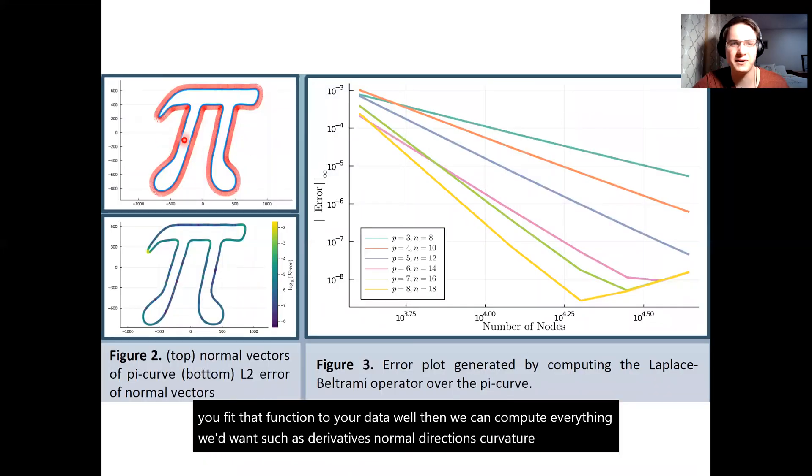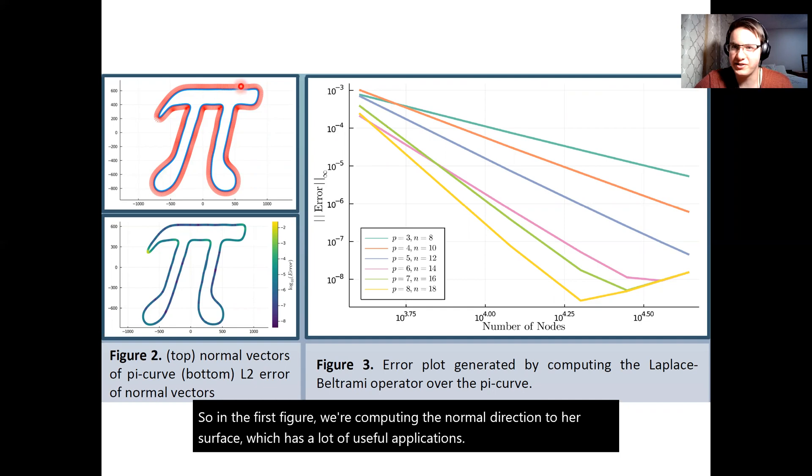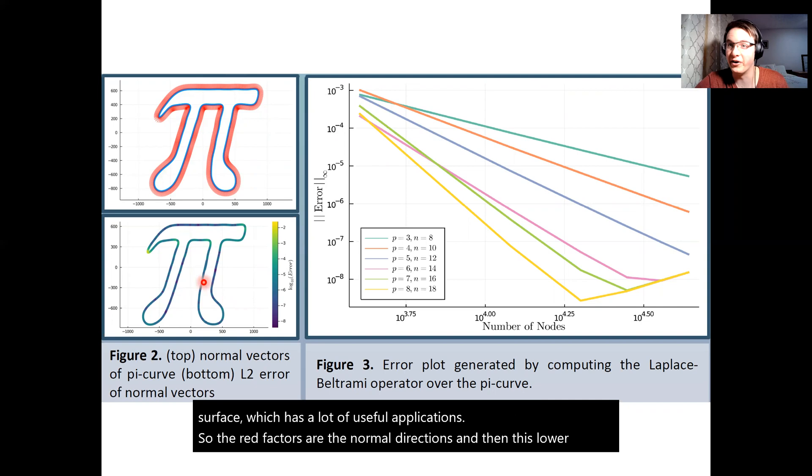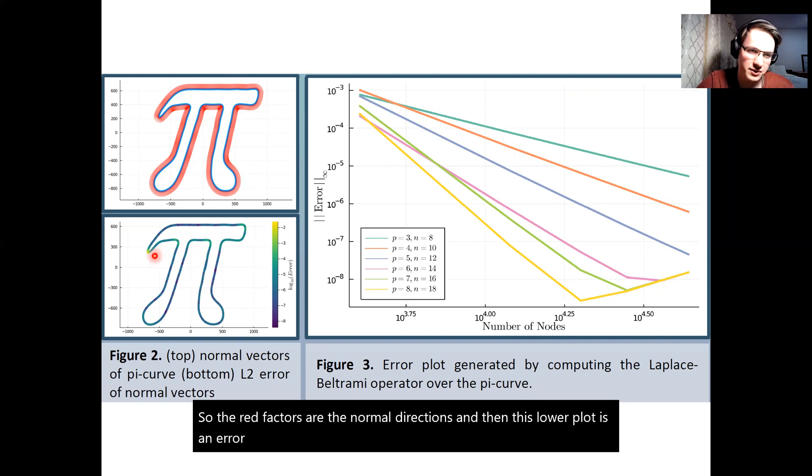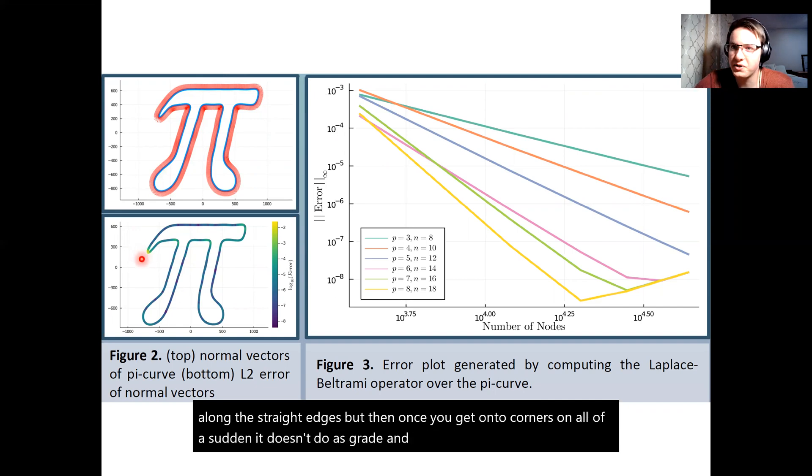So in this first figure we're computing the normal direction to our surface which has a lot of useful applications. The red vectors are the normal directions and then this lower plot is an error of that normal direction. We can see that it's really good along the straight edges but then once you get on to corners all of a sudden it doesn't do as great. And the reason it doesn't do too great at this corner is there's just not enough information there. You'd need more data points and we're doing as good as possible really.